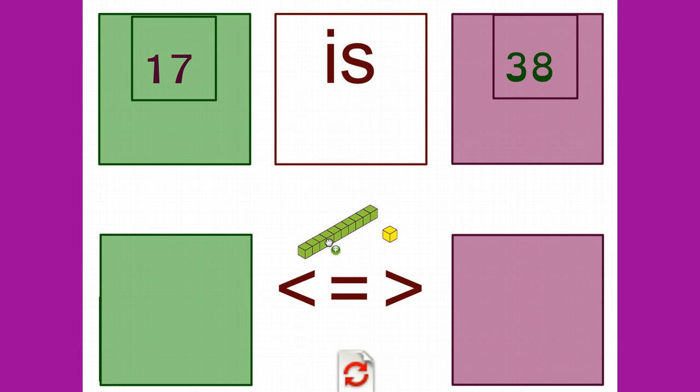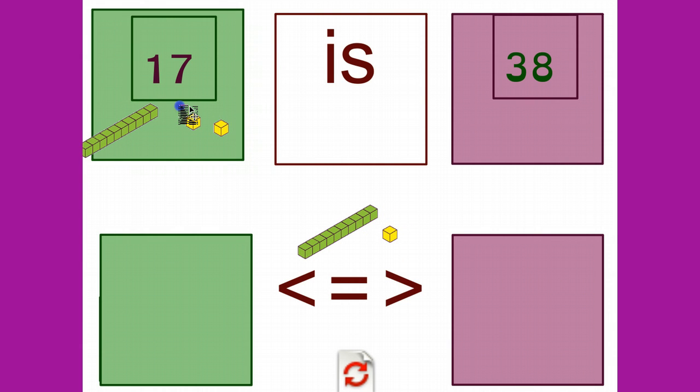Using my base 10 blocks, I'm going to build my numbers. Counting 1 ten and then 1, 2, 3, 4, 5, 6, 7 ones. That's 10 plus 7 equals 17.